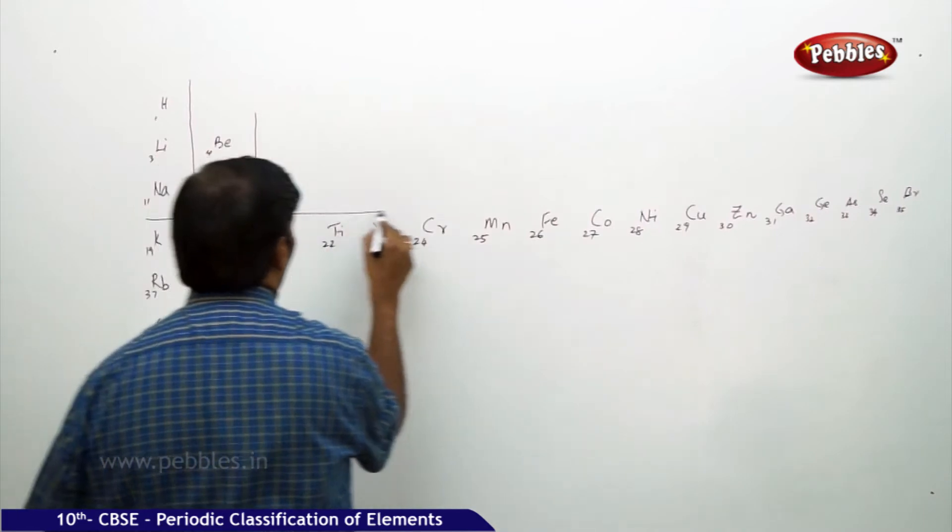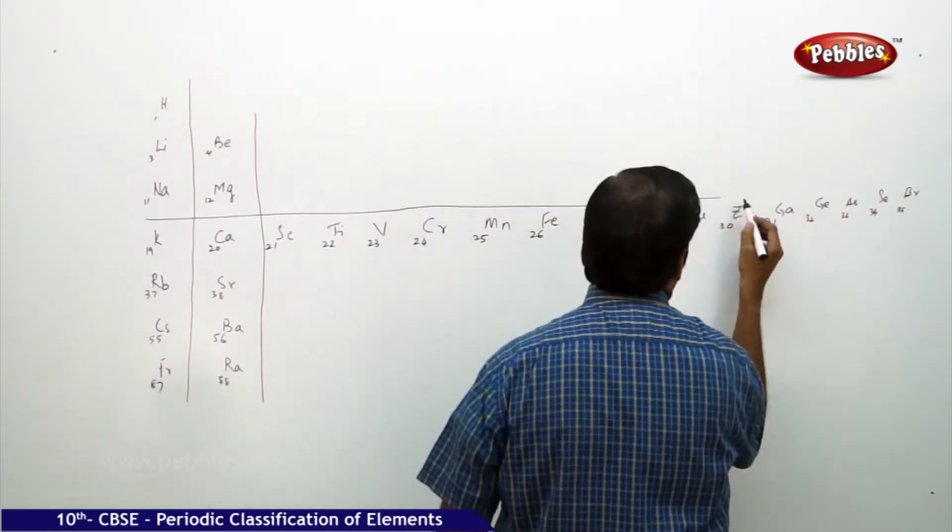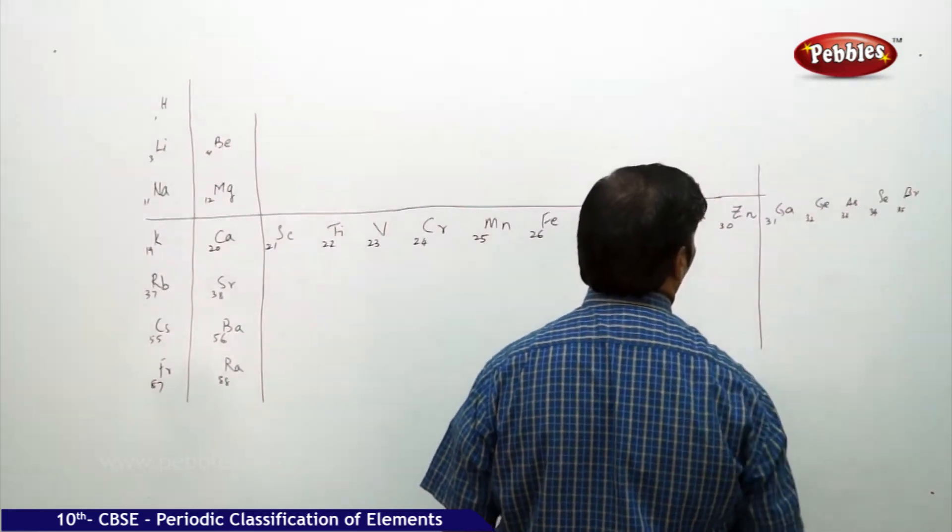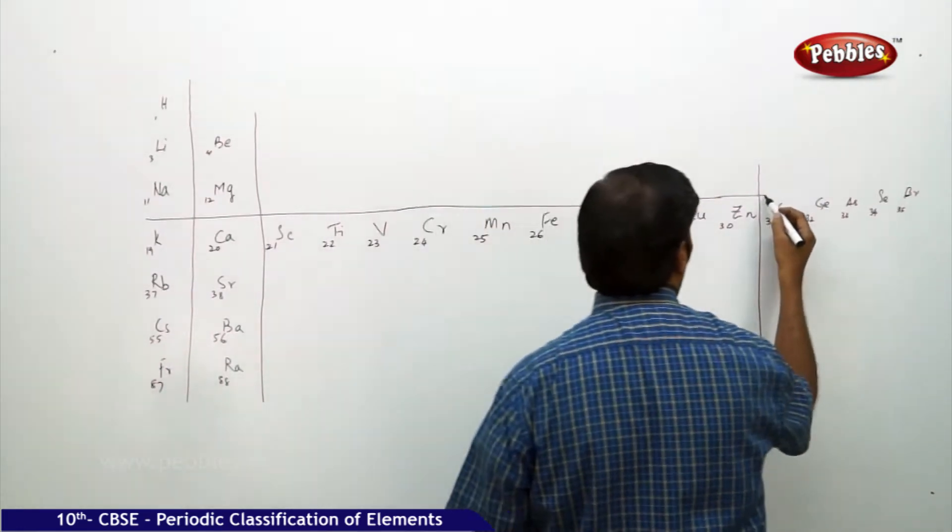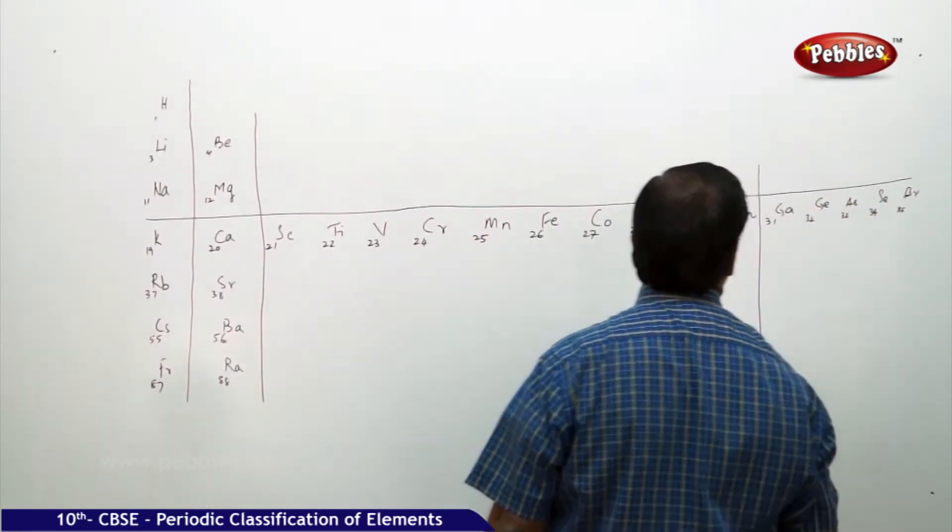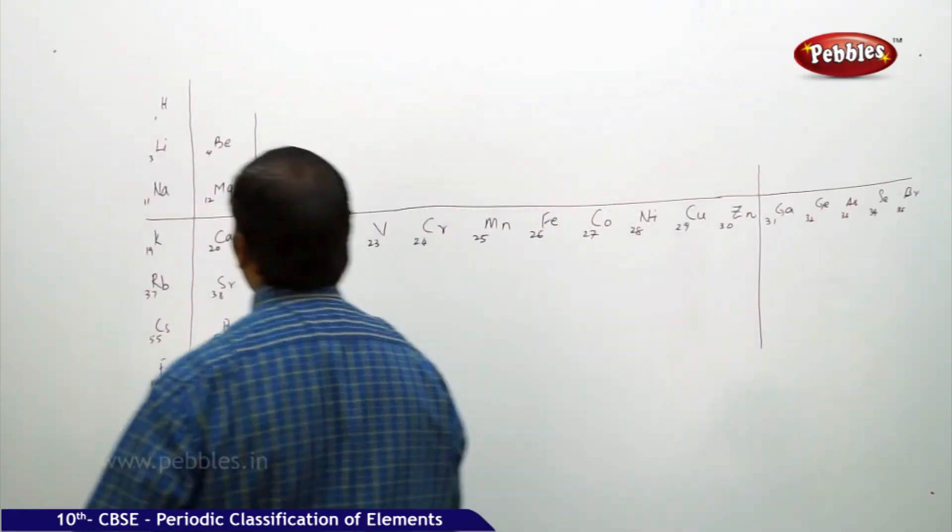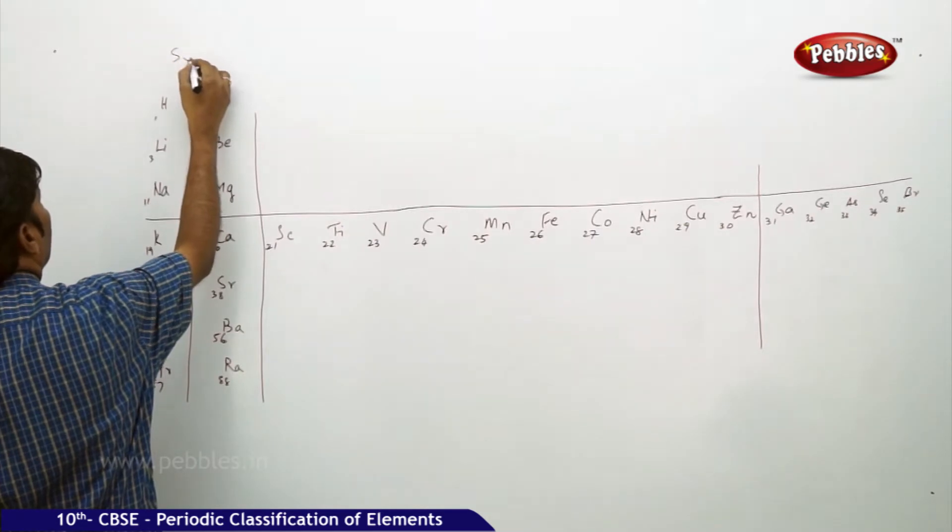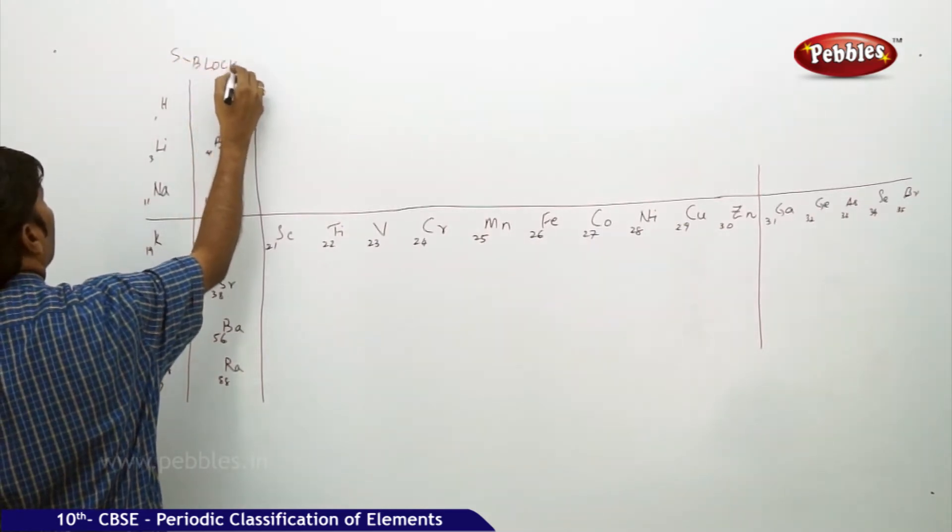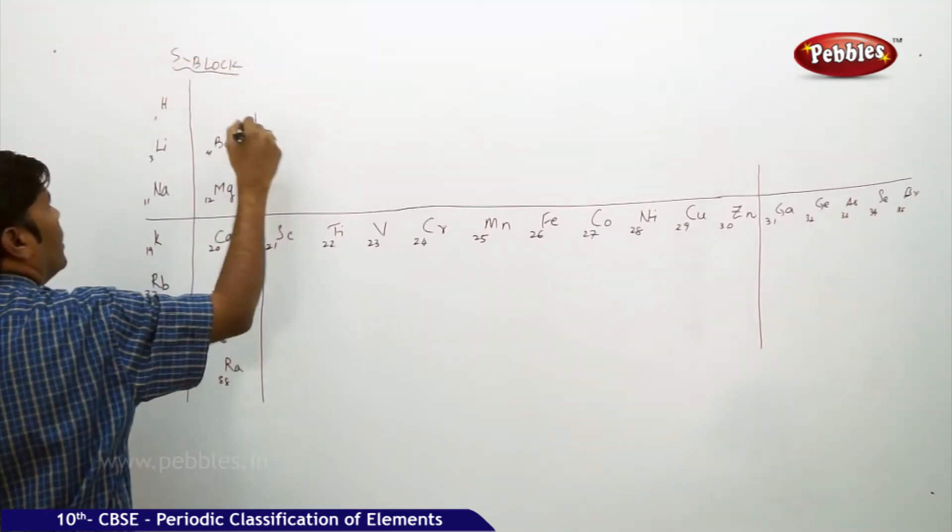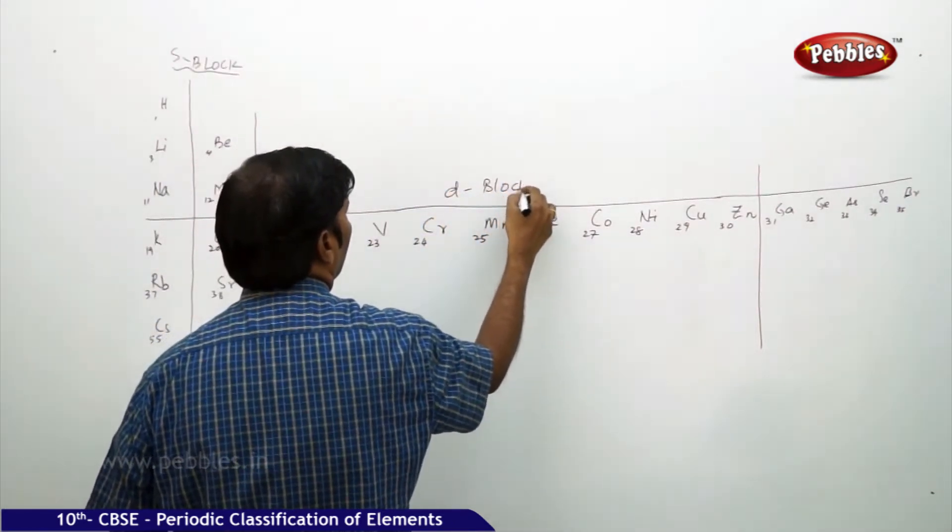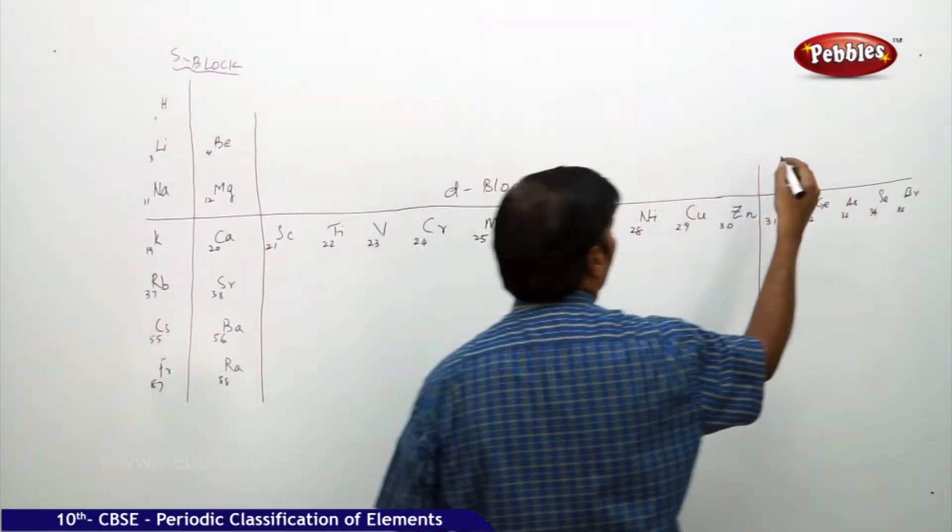If I draw a horizontal line like this and cut one more horizontal line like this, then I can say all this comes under P block. This comes under S block. All this comes under D block and P block.